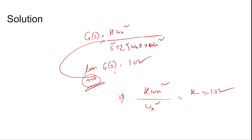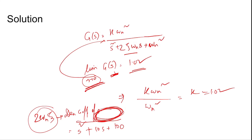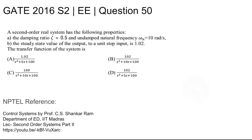We need to match the transfer function to the options. The denominator is fixed as s² + 2ζωₙs + ωₙ² = s² + 10s + 100. Options B and C both have this denominator, but we also need to verify that the DC gain equals 1.02 by checking limit s→0 of G(s). This condition is satisfied by option B, so option B is the correct answer.